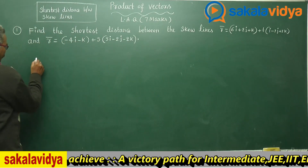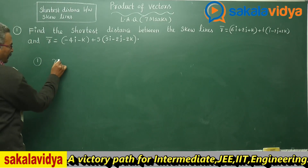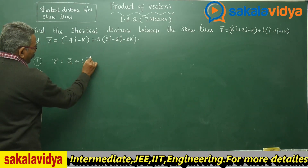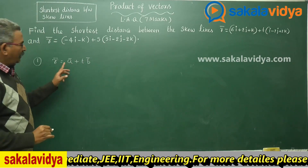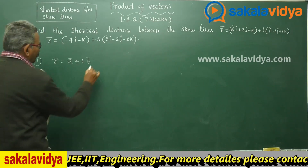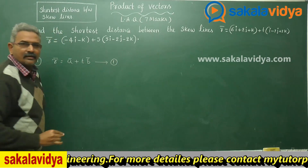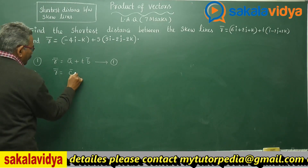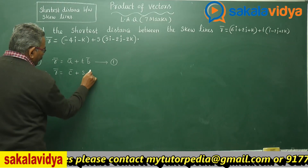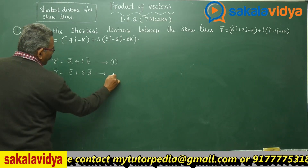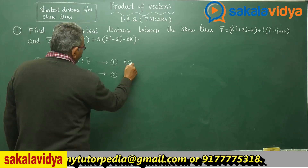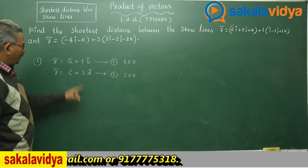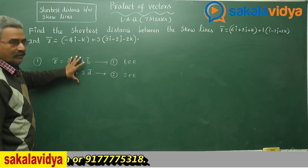Generally the equations will be like this: r̄ = ā + t·b̄ — this is one equation. The other equation is r̄ = c̄ + s·d̄, where t belongs to the real numbers and s belongs to the real numbers. These two are the equations of the skew lines.